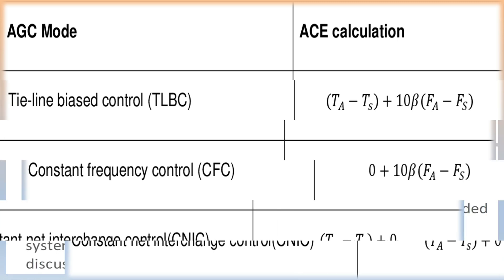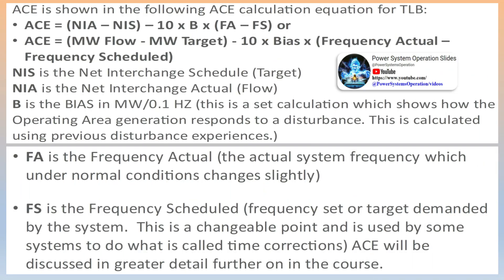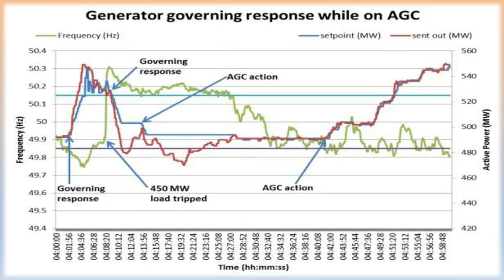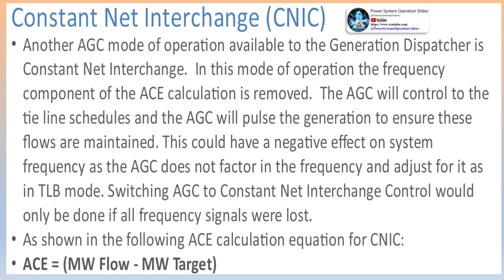ACE flow diagrams for disturbance conditions: the following diagrams illustrate the ACE calculations. If the frequency in the interconnection is low and the actual net interchange for an operating area is higher than scheduled, the two terms in the equation will tend to cancel each other out. This will indicate a disturbance took place in another operating area. Any attempts to lower the generation in this operating area to correct the net interchange deviation will have a negative impact on the system frequency problem in the main grid. If a generating unit trips anywhere in an interconnected system, the frequency decays. All the generating unit governors respond immediately by increasing their output to stabilize frequency.